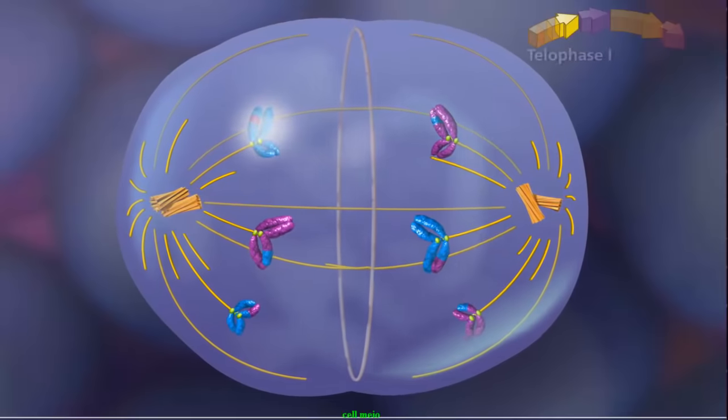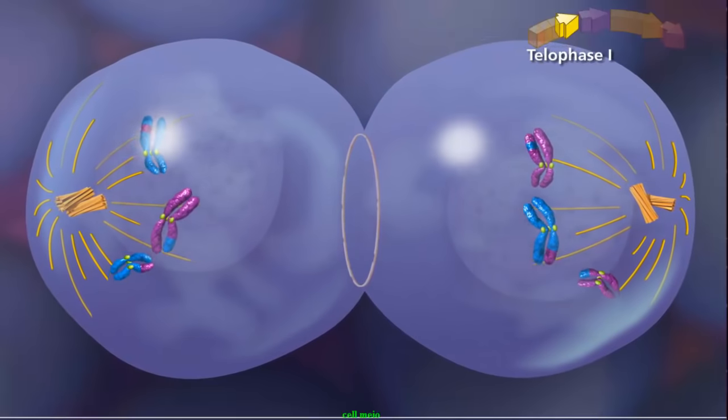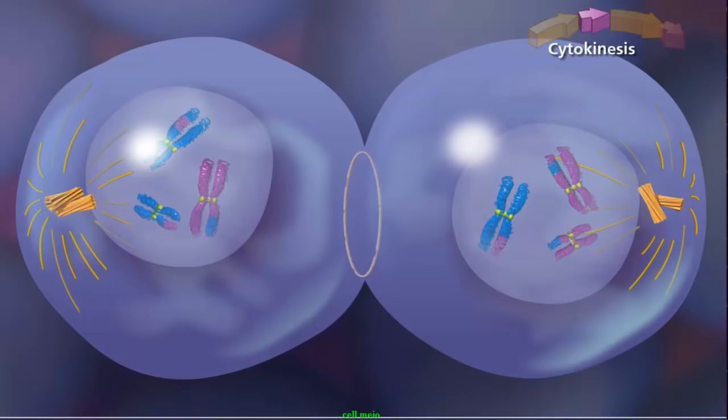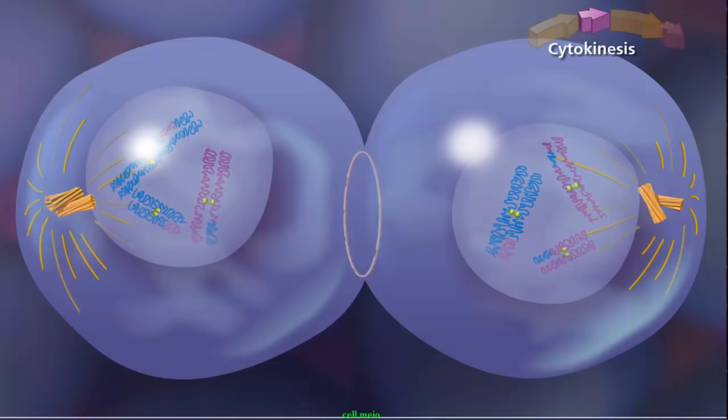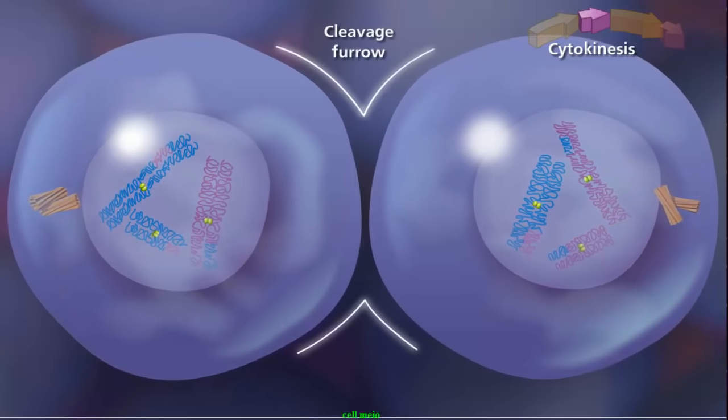Meiosis I ends with telophase I, when the chromosomes decondense and the nuclear envelope reforms. Cytokinesis separates the cytoplasmic material and the two daughter cells are separated by a cleavage furrow.